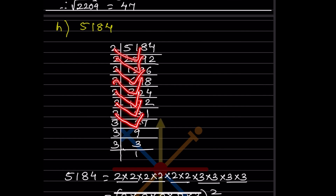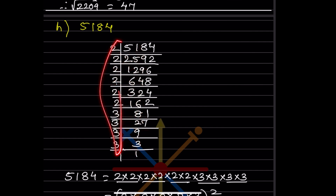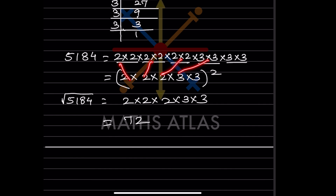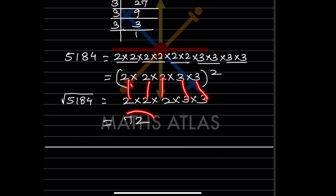For the next number, the factors are written over here. We pair them and group them, take the square of each pair, then remove the square by putting a square root sign. So the square root of 5184, when you multiply the paired factors, is 72.